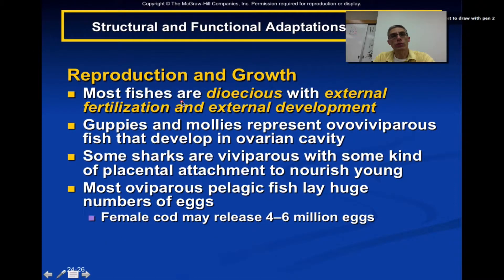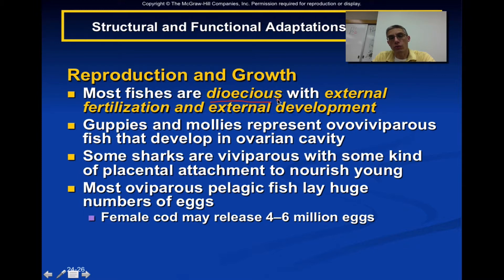The very last topic is reproduction and growth. Because there is such a huge variety of fish, the way these animals reproduce can definitely vary. Most fishes are considered dioecious, which means they have both male and female representatives. They're going to have external fertilization and most will have external development, but again there are exceptions to the rule.